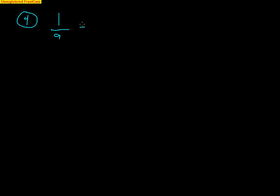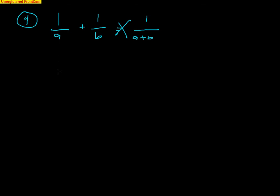Another very common mistake is kids not using common denominators. For example, 1 over A plus 1 over B. Some kids will say that's just 1 over (A plus B) — that is not true. You have to get a common denominator. The common denominator would be A times B. Multiply the first fraction by B over B to get B over AB, and multiply the second by A over A to get A over AB. So you end up with (B plus A) over AB.